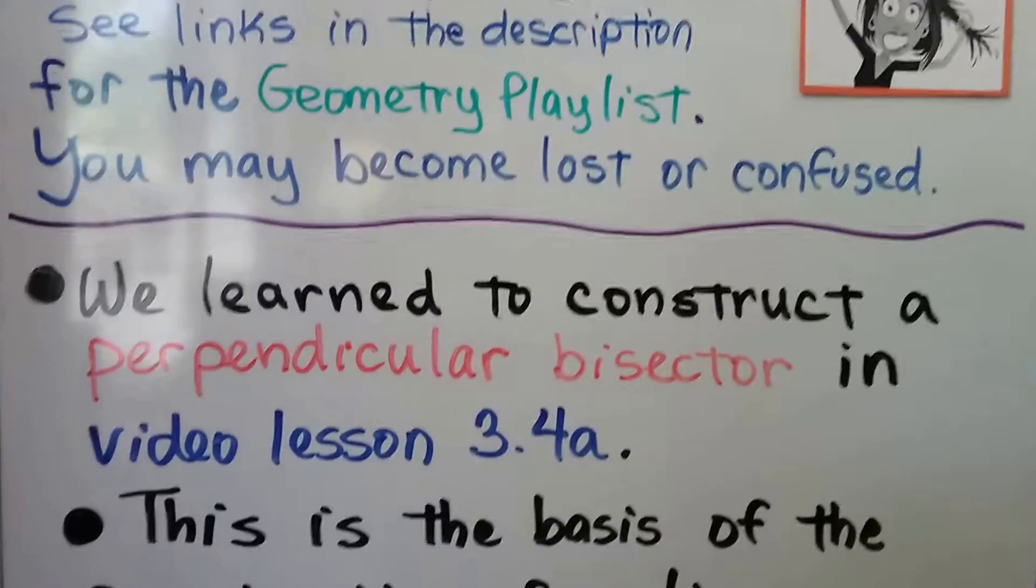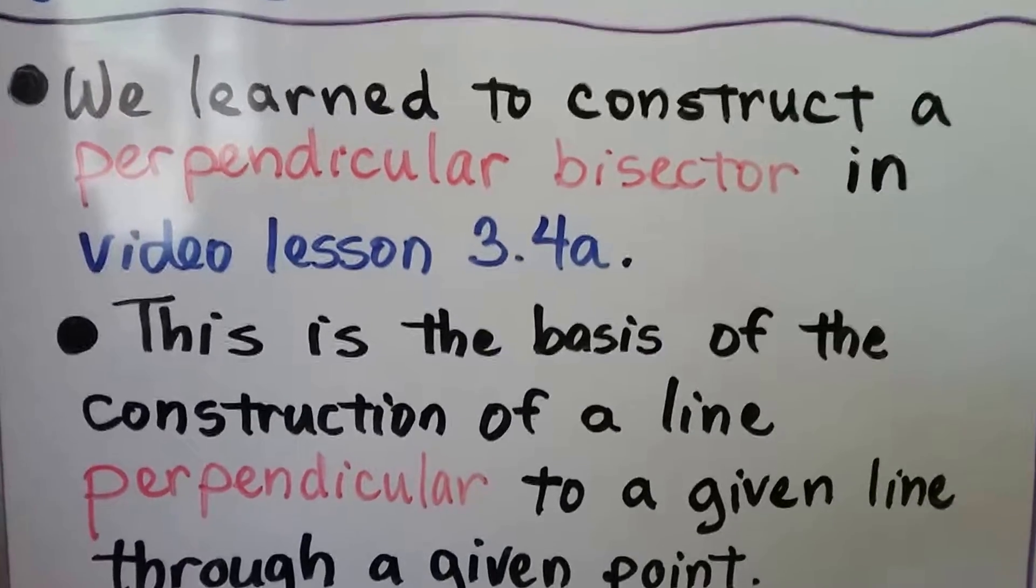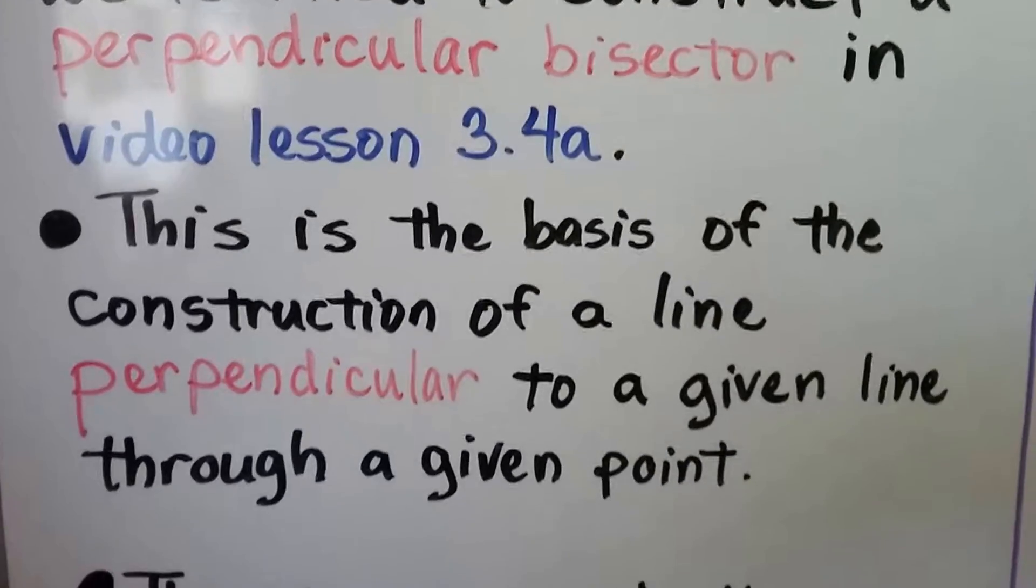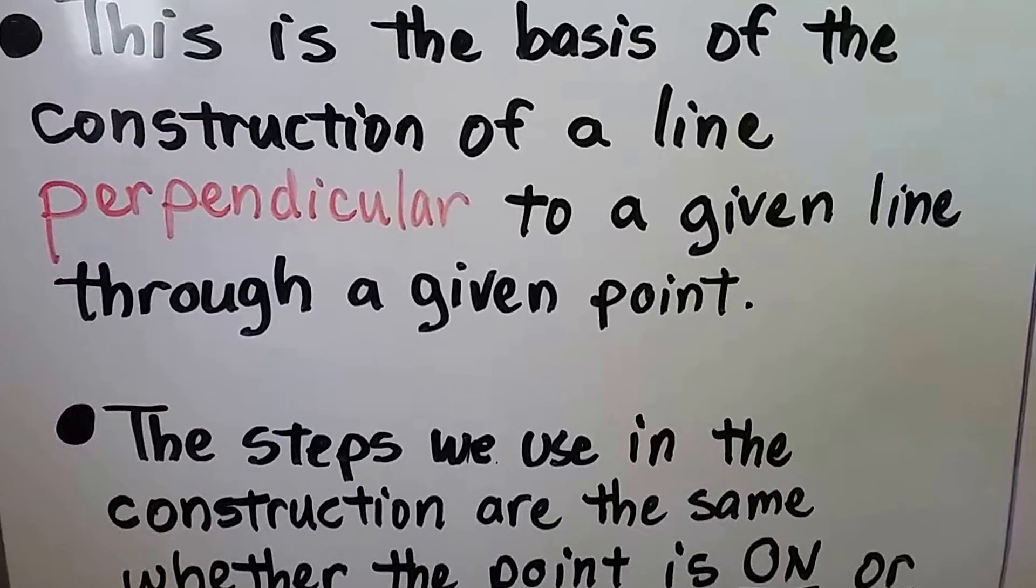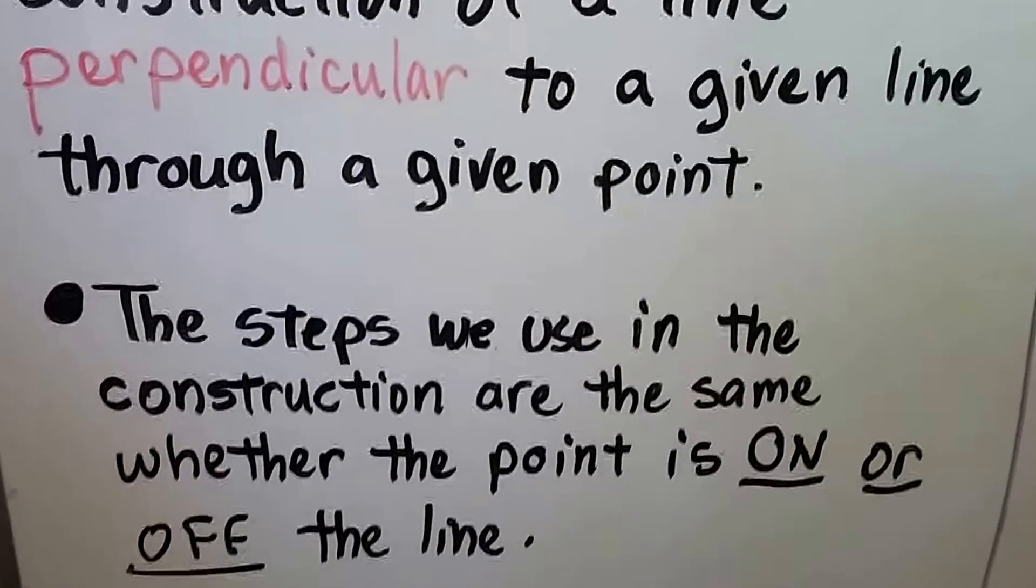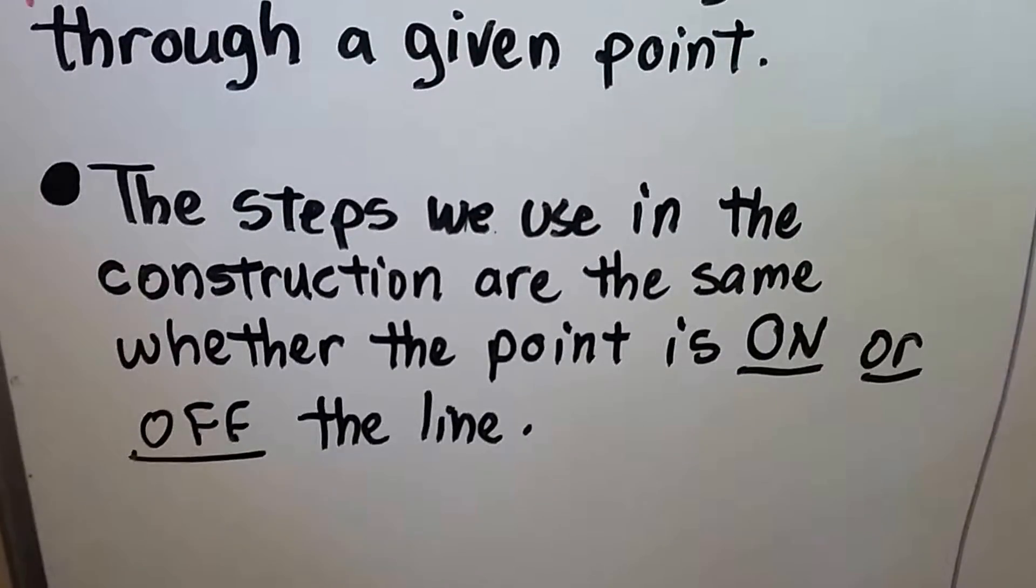We learned to construct a perpendicular bisector in video lesson 3.4a. We're in 3.4c now. This is the basis of the construction of a line perpendicular to a given line through a given point. And the steps we use in the construction are the same, whether the point is on or off the line.